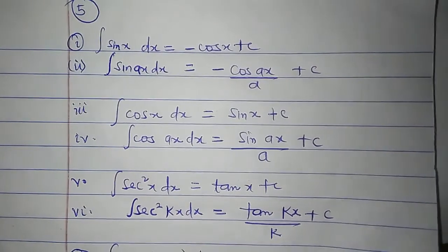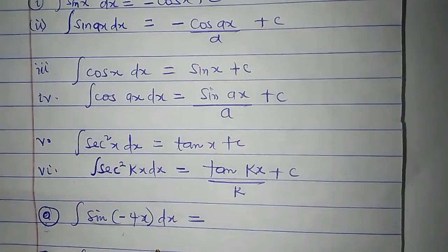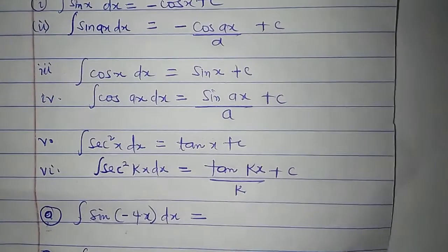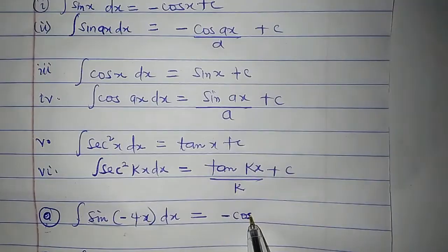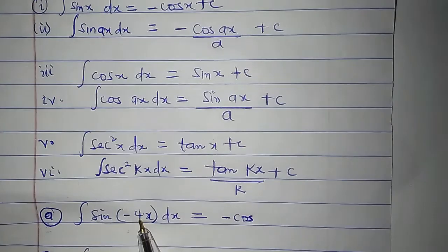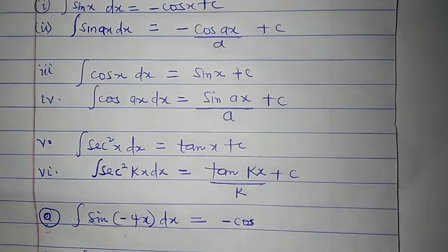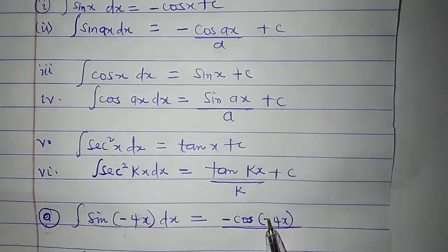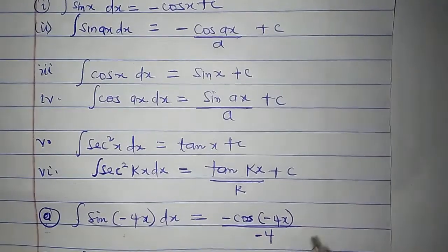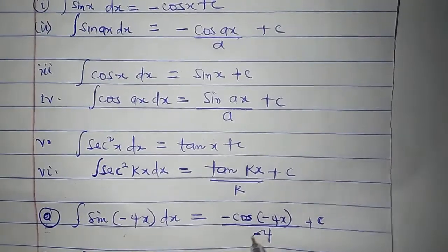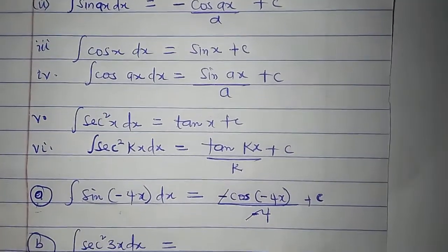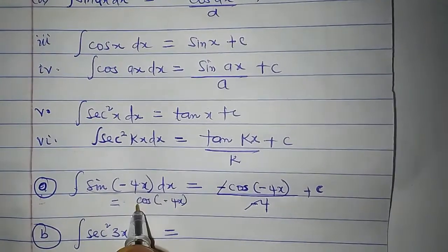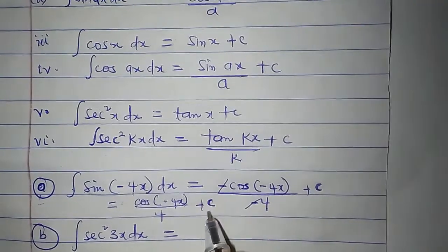Applying the rule for sin ax: the integral of sin minus 4x dx. Here our a is minus 4, so it will be minus cos of minus 4x, all over a, which is minus 4, plus c. The minus signs cancel, so the integral equals cos of minus 4x all over 4, plus c.